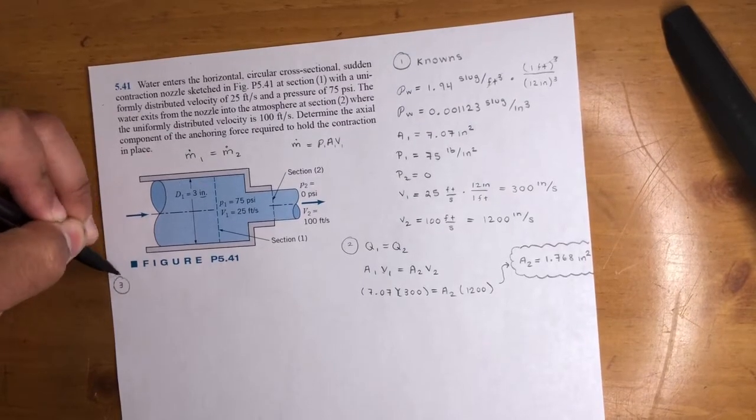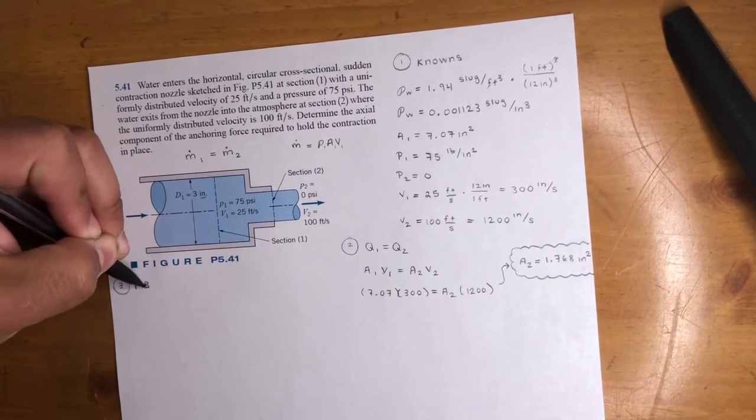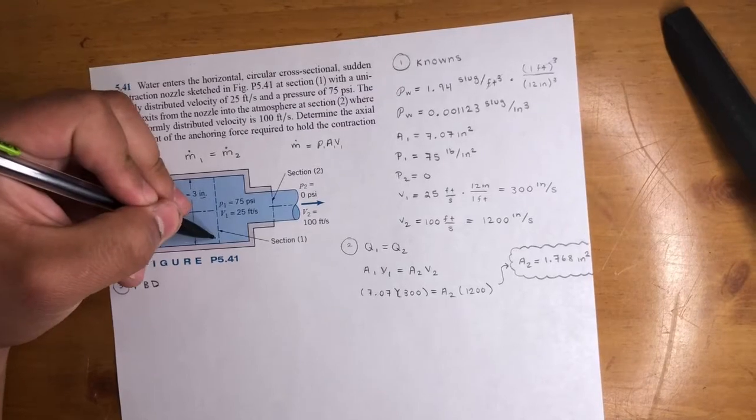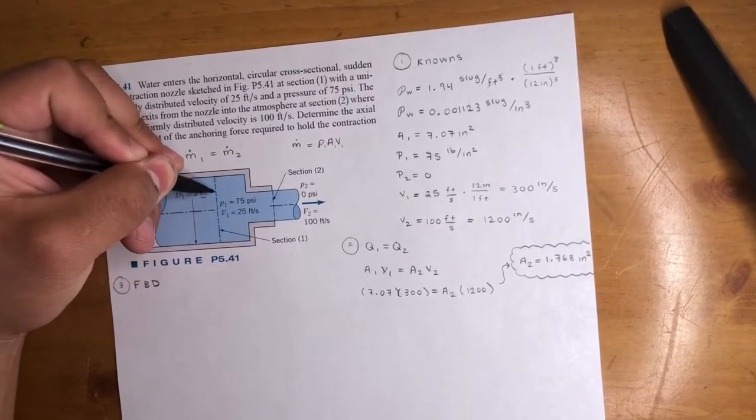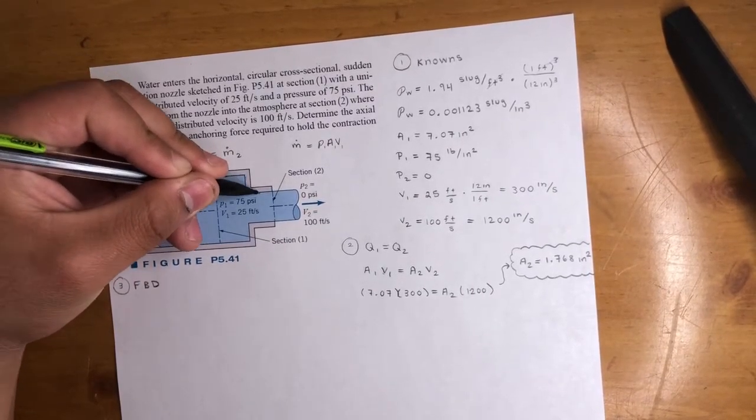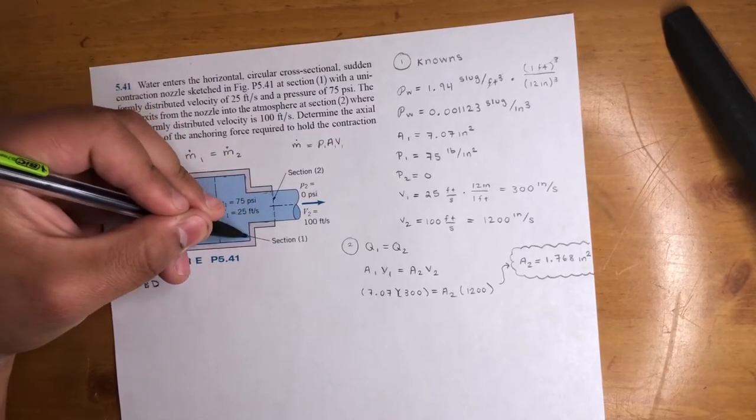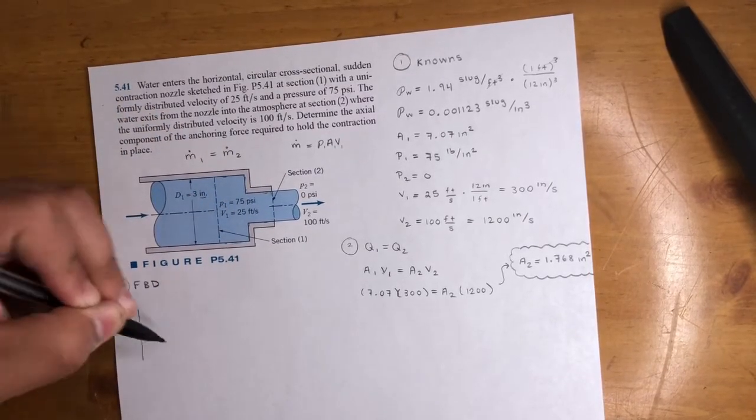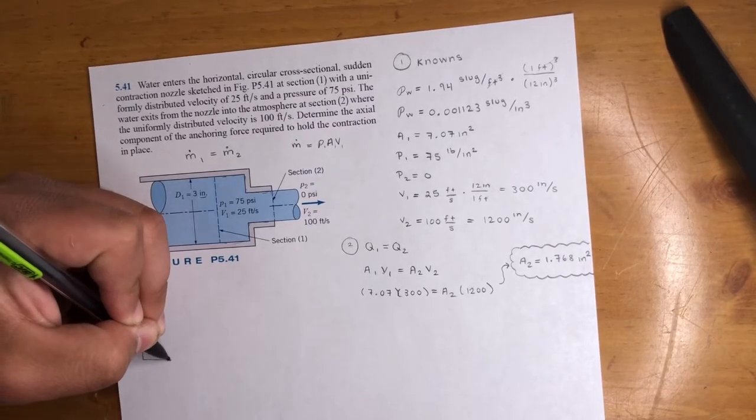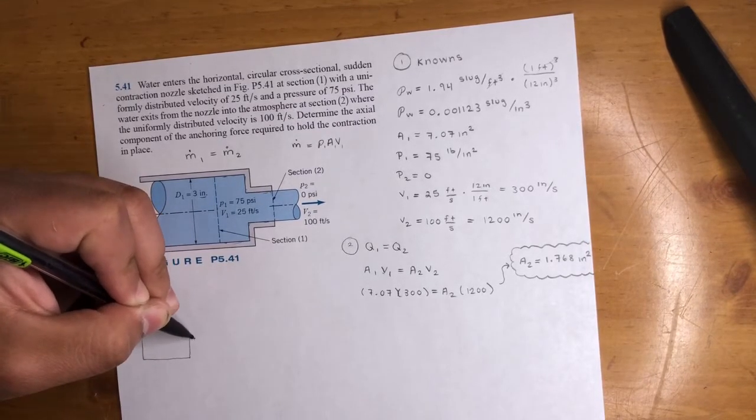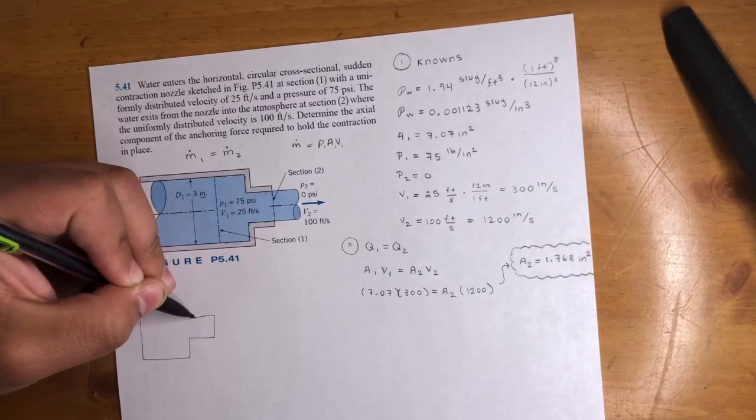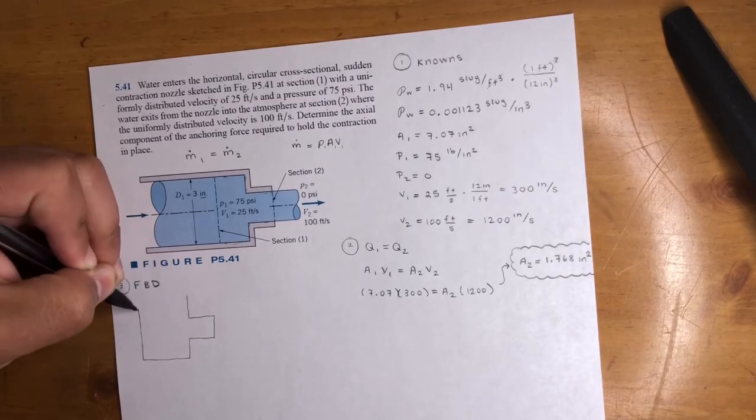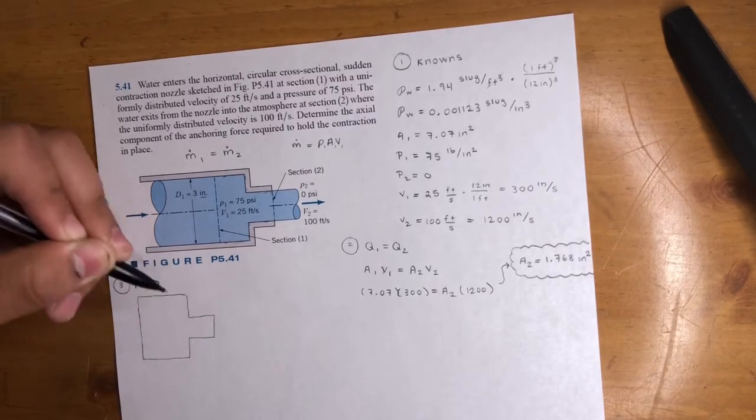So step three, let's go ahead and start the free body diagram. So here's the control volume. They kind of laid it out right from here all the way here. So let's go ahead and draw that out like this, like this, like this, not the best, but it's all right.